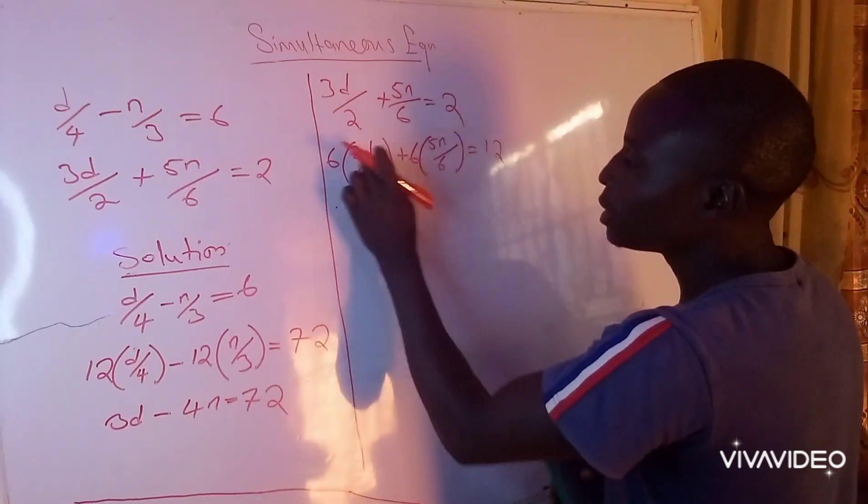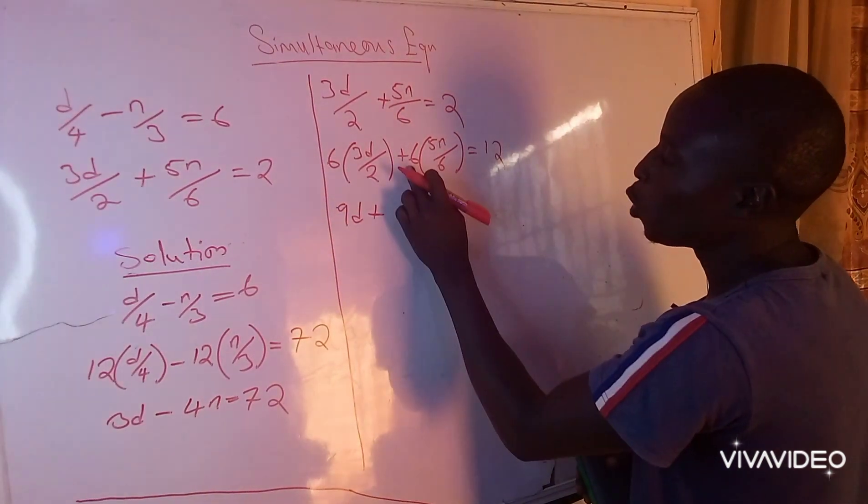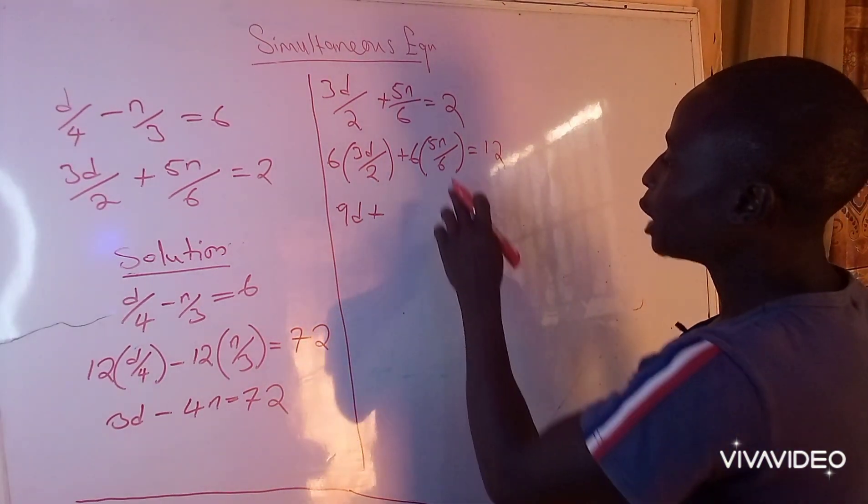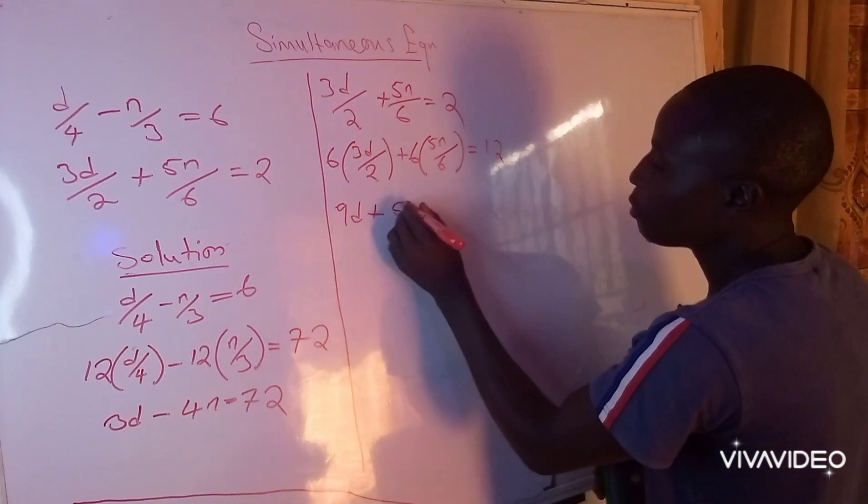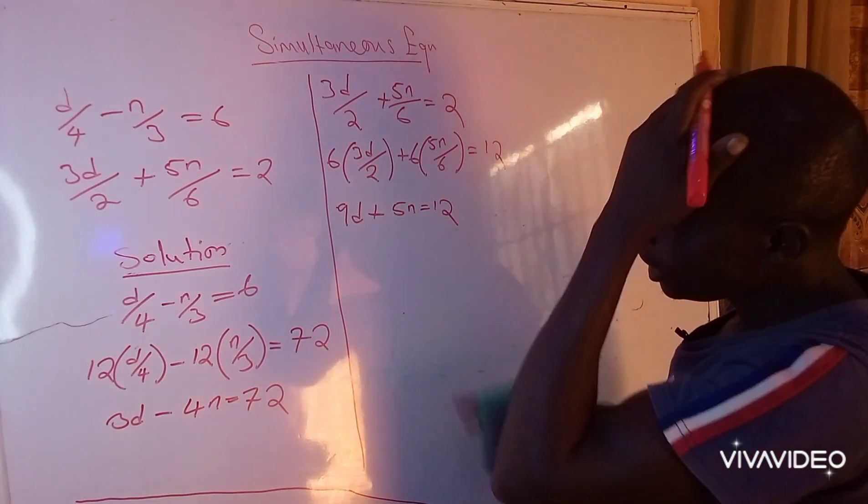Then 2 will go into 6 three times, 3 times 3 is 9, I have 9d plus—6 will go into 6 once, that means 6 and 6 will cancel out—I have 5n equals 12. This is the second equation required to complete the two equations.